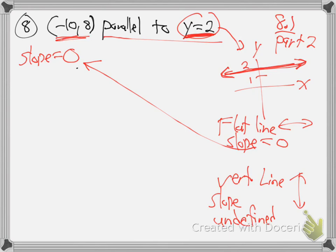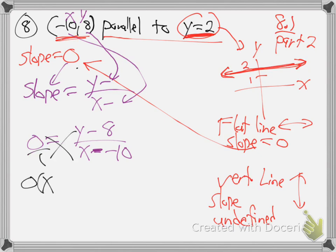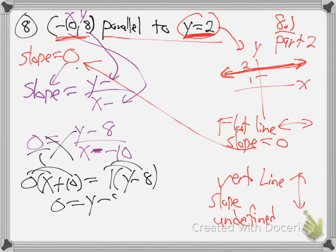So they're telling me slope is 0. What do we do? We write slope equals y minus blank over x minus blank. This is the x value and the y value. Slope is 0, so: 0 equals y minus 8 over x minus negative 10 — double negative there. Put this over 1, cross multiply: 0 times x plus 10 equals 1 times y minus 8. That gives us 0, so 1 times these gives y minus 8. Add the 8 over: y is 8.